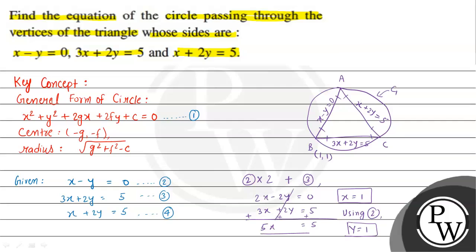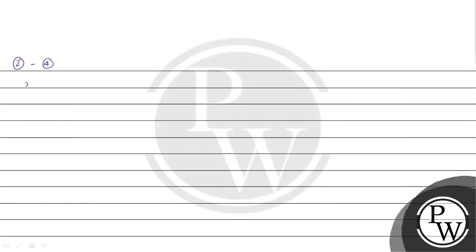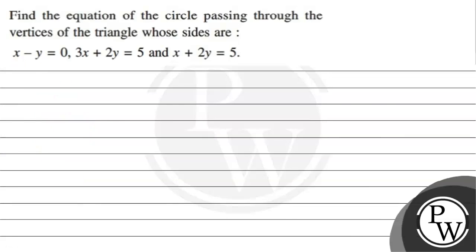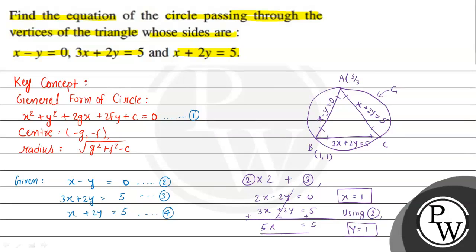Now solving equation 2 and equation 4 gives vertex A. Subtracting equation 4 from equation 2: x minus y minus (x plus 2y) equals 0 minus 5, so minus 3y equals minus 5, giving y equals 5 by 3. Using equation 2, since y equals x, x is also 5 by 3. Therefore, point A is (5/3, 5/3).